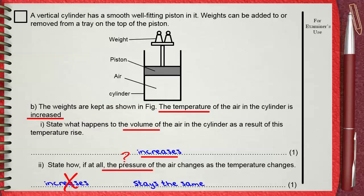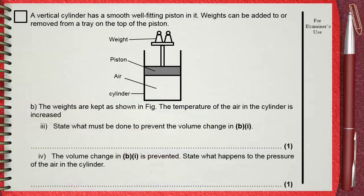See the next question for more understanding. Triple I. State what must be done to prevent the volume change in BI. Question 4. The volume change in BI is prevented. State what happens to the pressure of the air in the cylinder.